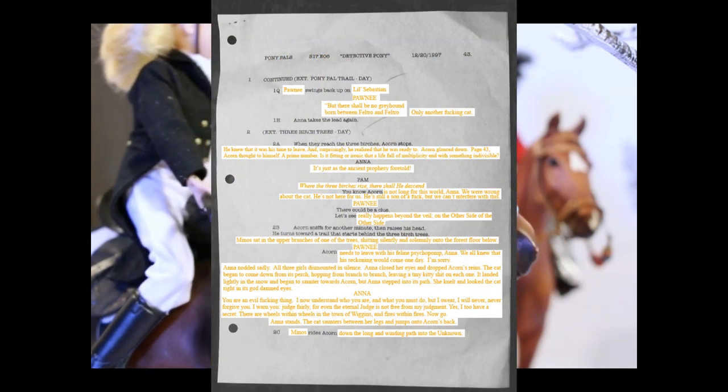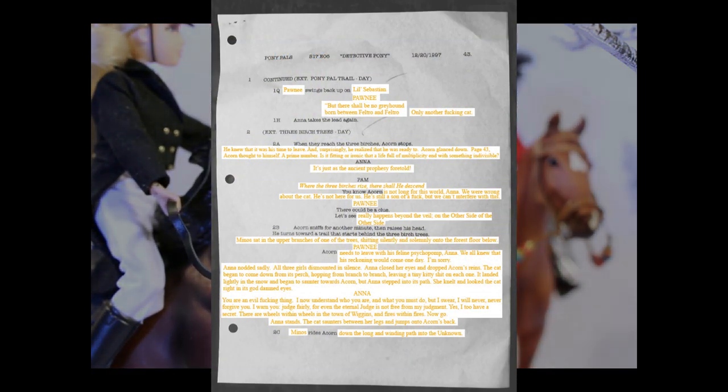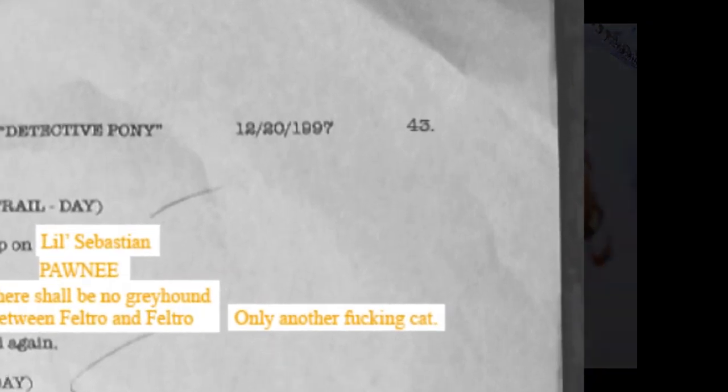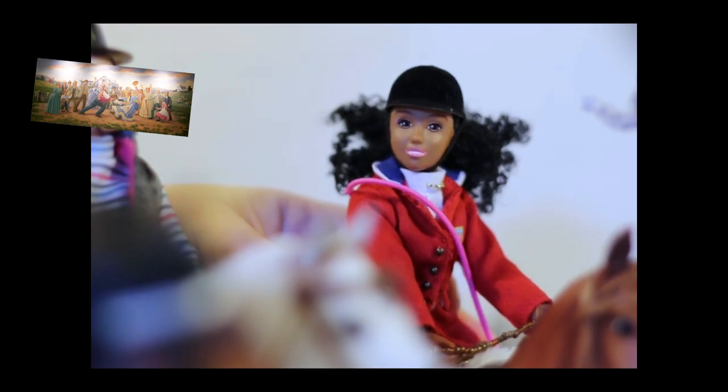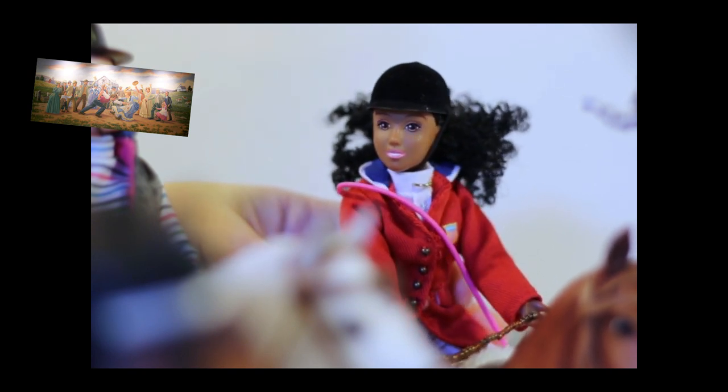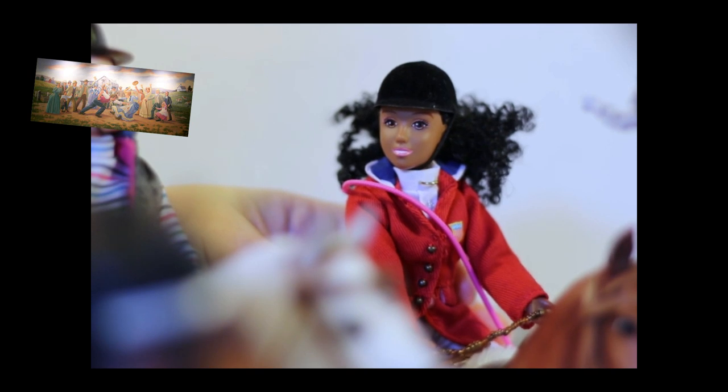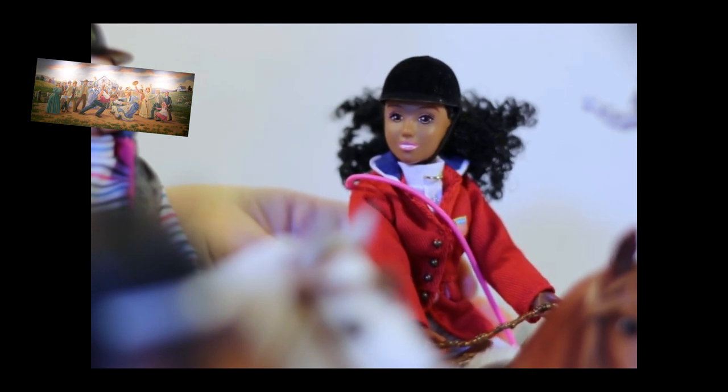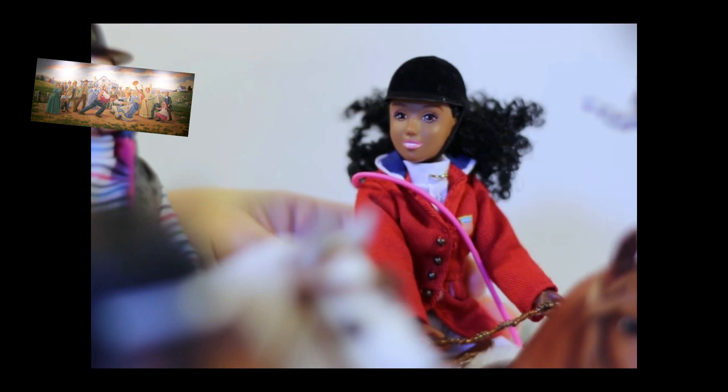He glanced down. Page 43, Acorn thought to himself. A prime number. Is it fitting or ironic that a life full of multiplicity end with something indivisible? It's just as the ancient prophecy foretold, said Anna excitedly. Where the three birches rise up, there shall he descend, said Pam. You know Acorn. It was not long for this world, Anna. We were wrong about the cat. He's not here for us. He's still a son of a fuck, but we can't interfere with this.